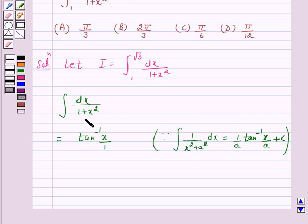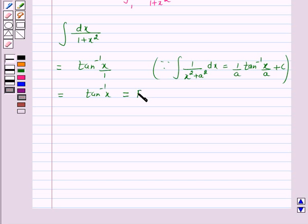So here a is 1. So we have the integral of dx upon 1 plus x square is equal to tan inverse x. And this is F(x), that is the antiderivative of the given function 1 over 1 plus x square.